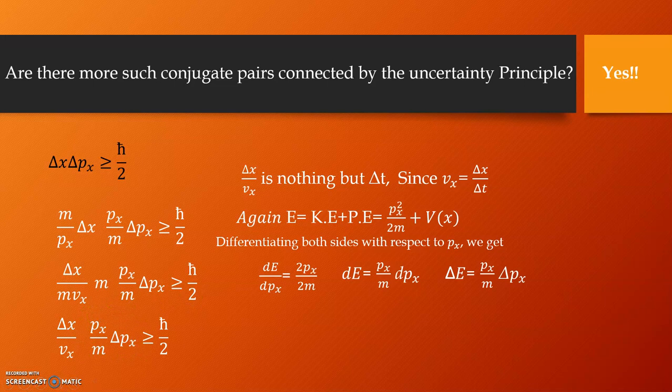So, what we are essentially left with is a new equation which has energy and time in them. That is, the product of delta E and delta t being greater than h-bar by 2. So, energy and time are also a conjugate pair related via the Heisenberg uncertainty principle.